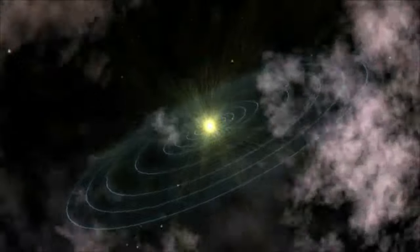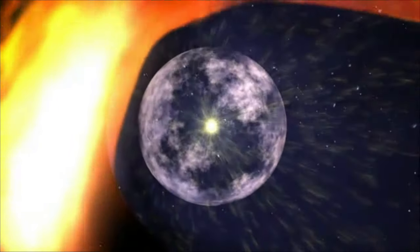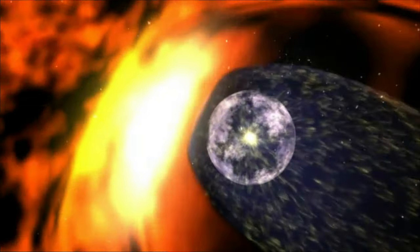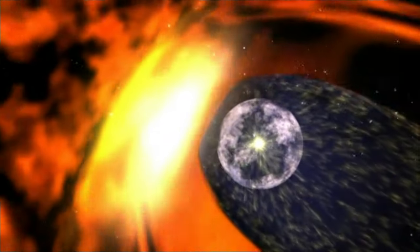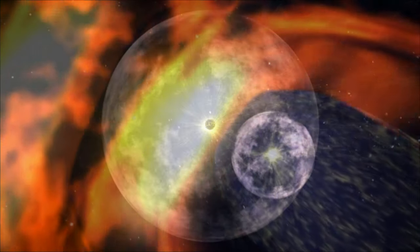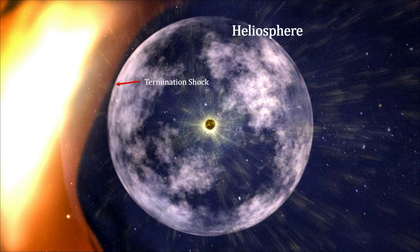The heliosphere is the area under the influence of the Sun. The two major components to determining its edge are the heliospheric magnetic field and the solar wind from the Sun. Three major sections from the beginning of the heliosphere to its edge are the termination shock, the heliosheath, and the heliopause.